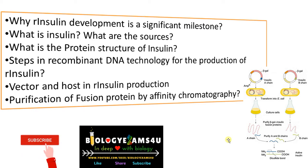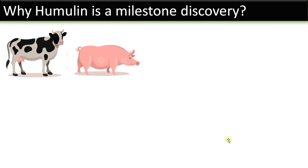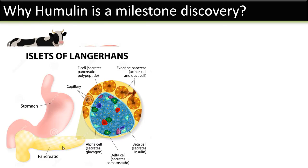We'll be discussing all these within 5 to 10 minutes. Please watch till the end for complete understanding. If you are new to this channel, please consider subscribing. Why is humulin or recombinant insulin considered a significant milestone in recombinant DNA technology? As we all know, insulin is a hormone that regulates blood glucose level, essential for normal functioning of life. It is a drug used to treat diabetes.